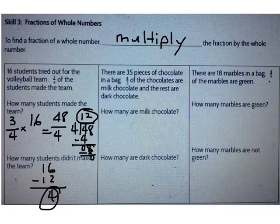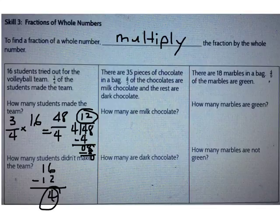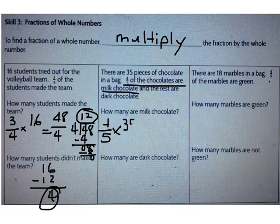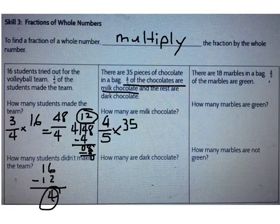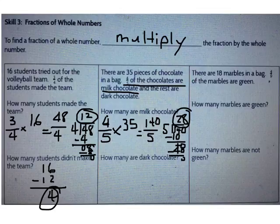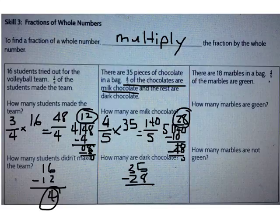There are 35 pieces of chocolate in a bag. 4/5 of the chocolates are milk chocolate and the rest are dark chocolate. How many are milk chocolate and how many are dark chocolate? I can multiply 4/5 times 35 to find the number of milk chocolate candies. What's 4/5 times 35? Write your answer as a whole number. The correct answer is 28. Now I need to find how many are dark chocolate, so I subtract 35 minus 28. When I subtract, I get 7.